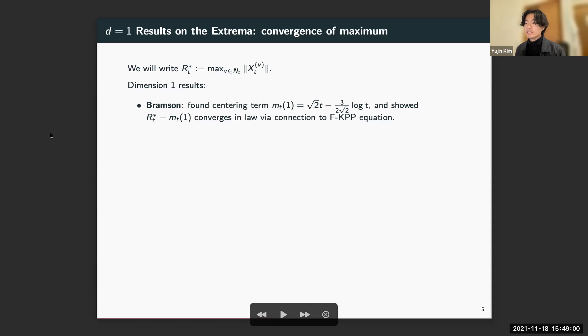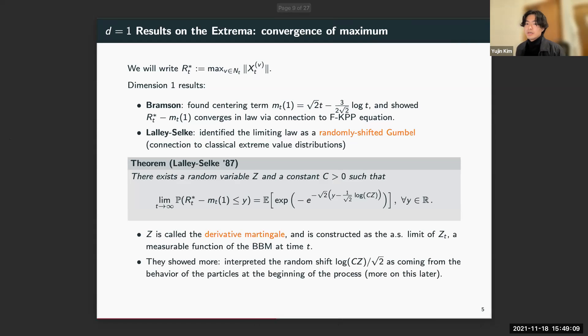This description is a bit unsatisfactory because we would like to compare the limit with one of the classical distributions from IID extreme value theory. This is the work of Lalley and Selke, who identified the limiting law as a randomly shifted Gumbel. In the theorem statement, we see that the limiting distribution function on the left-hand side is given by e^(-e^(-something)), where we see this random shift in terms of some random variable Z.